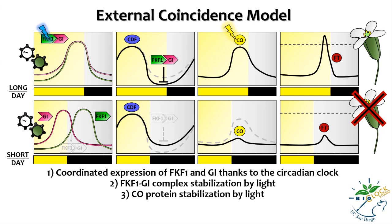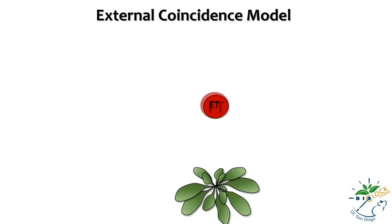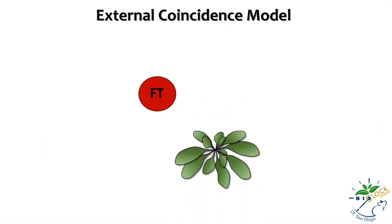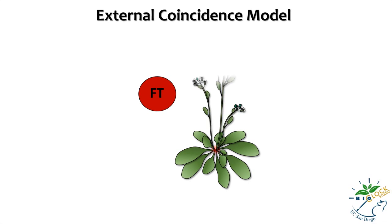This whole process occurs in the leaves. Once FT is produced, it travels to the bud located in the center of the Arabidopsis rosette, where FT triggers the developmental process that results in the production of flowers.